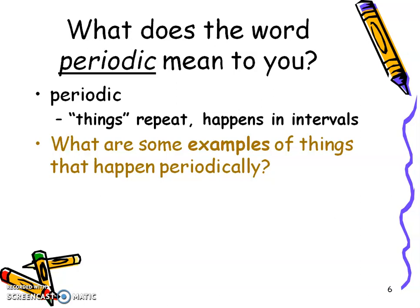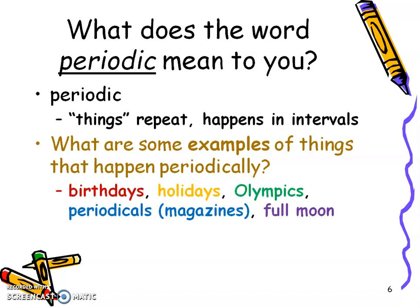So you should have paused the video and maybe you came up with some of the ones I did, like birthdays once a year, holidays usually once a year, Olympics every four years. Back in the day people got magazines, but they were actually called periodicals because they happen periodically. Some magazines happened once a week, some three or four times a year. And think about that full moon. And I'm sure there's other things that happened periodically that you came up with.